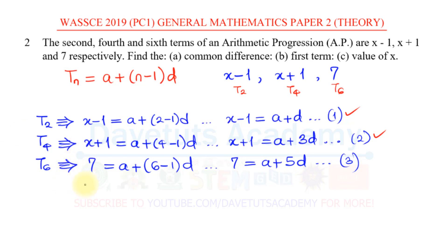What I'm going to say is, let's say I have equation 2 minus equation 1. That will mean that on the left hand side, I'm going to have x+1, that is equation 2 minus x-1, coming from equation 1. Then that is equal to a+3d for equation 2, minus a+d from equation 1.